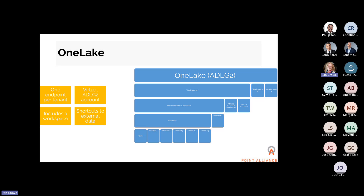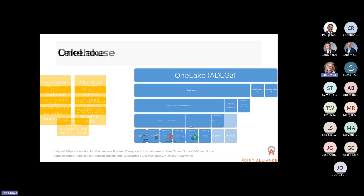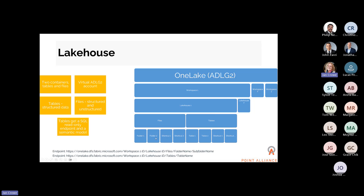It makes licensing at a capacity level versus having to set up all these individual components within Azure — so you actually don't need an Azure account to use Fabric. All the compute engines store their data automatically in OneLake, whether files, database tables, shortcuts, or folders. They're all stored in Delta Parquet format, which is an open standard and essentially a storage format for all tabular data.